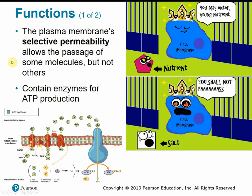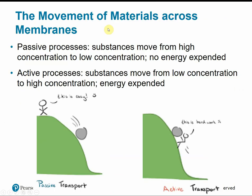The function of the cell membrane is to regulate passage of substances in and out of the cell — it's said to be selectively permeable, meaning only certain things can pass through it. The cell membrane also contains enzymes for ATP energy production. There are two basic ways to move substances across membranes: passive processes, moving from high to low concentration with no energy expended — like riding a bike downhill or floating downstream — versus active processes, moving from low to high concentration against the gradient, requiring energy, like riding uphill or swimming upstream.